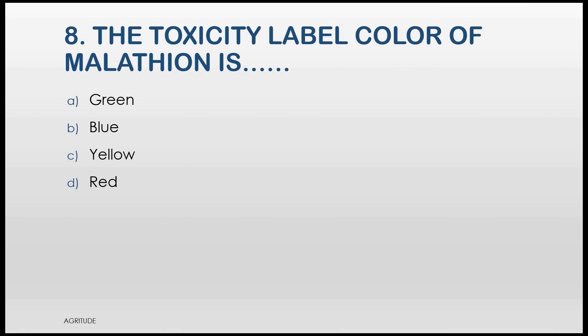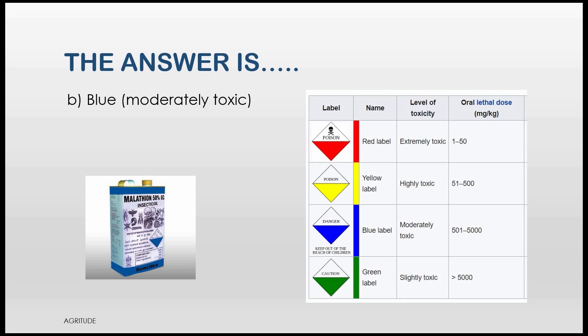Here is the eighth question. The toxicity label color of Malathion is A. Green, B. Blue, C. Yellow, D. Red. The toxicity label color of Malathion is blue. That is moderately toxic.